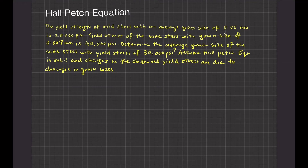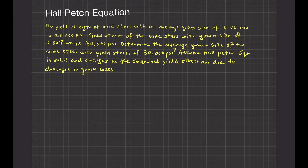Here we have an example related to the Hall-Petch equation. The yield strength of mild steel with an average grain size of 0.05 mm is 20,000 psi. The yield stress of the same steel with a grain size of 0.007 mm is 40,000 psi. Determine the average grain size of the same steel with a yield stress of 30,000 psi, assuming the Hall-Petch equation is valid and changes in yield stress are due to changes in grain size.